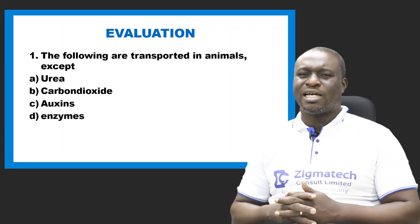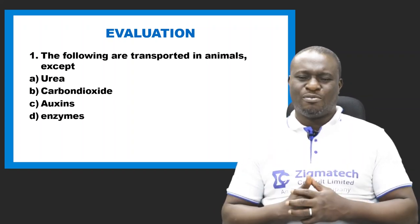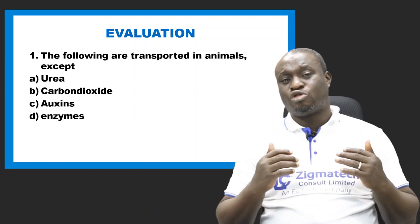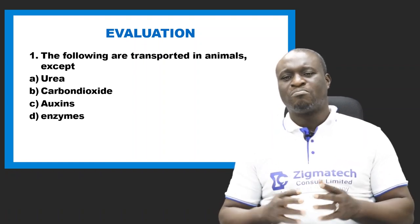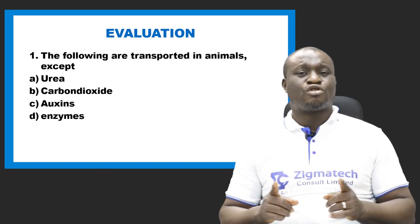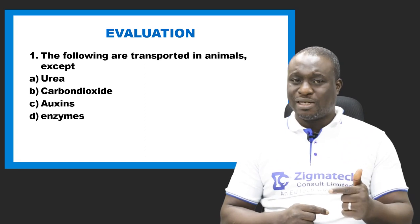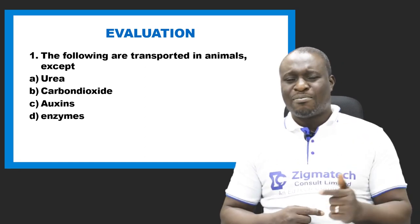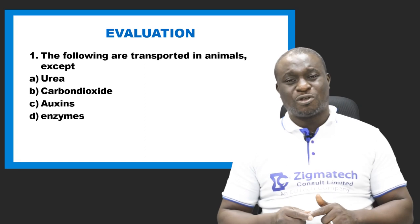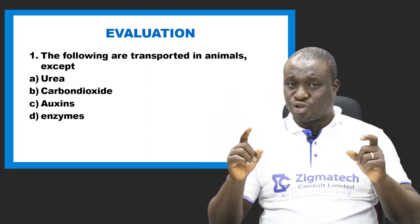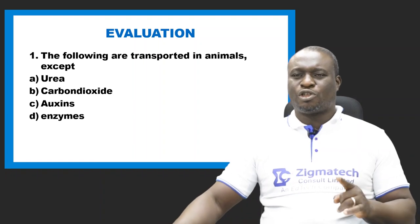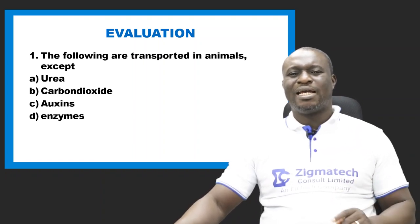Question 1: The following are transported in animals except — remember we talked about materials being transported in animals. Urea is a metabolic waste being transported. Carbon dioxide is also transported in animals. Enzymes are also transported. But the correct answer is the option referring to plant hormones — those are not transported in animals. So the option that is not transported in animals is plant hormones, not animal enzymes.